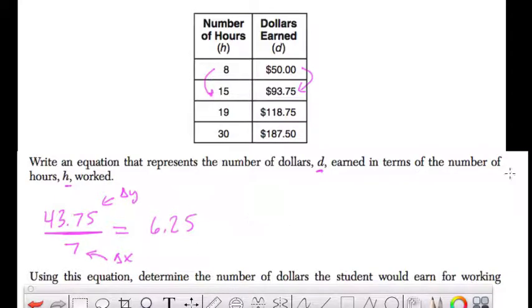So we want to use this now to find the Y intercept. Well, Y equals MX plus B. M is the slope, B is the Y intercept. We have M now. It's 6.25, so we have Y equals 6.25X plus B.